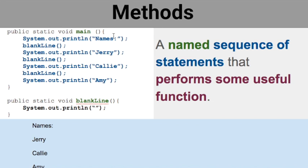Over here on the side is an example from the book. The first method is called public static void main. Main is the name of this one, and main is always the first method that executes. Even if it's not in the right order — I tend to write mine in order of execution, but it doesn't matter — you're going to look for main and then see what other things are called.